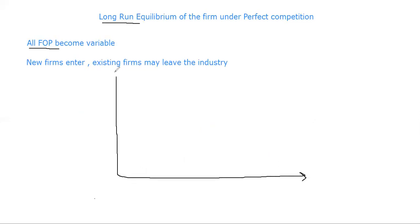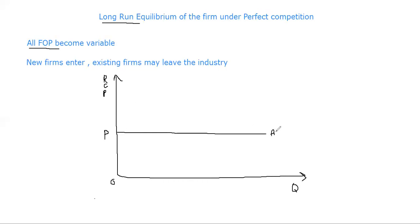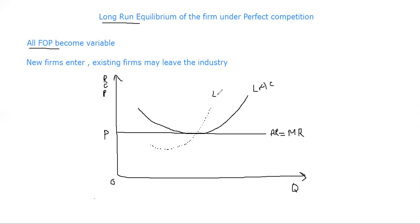Here we have a coordinate system: the horizontal axis represents the output level, and the vertical axis represents revenue, cost, and price. The price curve is perfectly elastic. This is the firm's average revenue curve and the firm's marginal revenue curve. This is the firm's long-run average cost curve — LAC — and here we have the long-run marginal cost curve — LMC.